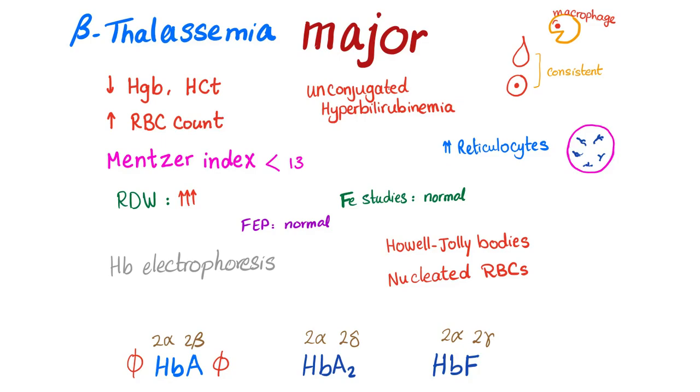Consistently we will find target cells, teardrop cells, increased reticulocyte count due to hemolysis. Bone marrow is trying to push harder and produce immature RBCs - baby red cells known as reticulocytes. Howell-Jolly bodies are basophilic nuclear remnants inside the RBCs - immature cells.